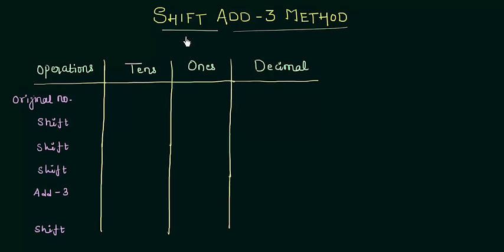In this presentation we will study the shift add 3 method. You might be thinking what is this method and for what purpose it is used. It is used to convert a binary number to BCD, where BCD stands for binary coded decimal.